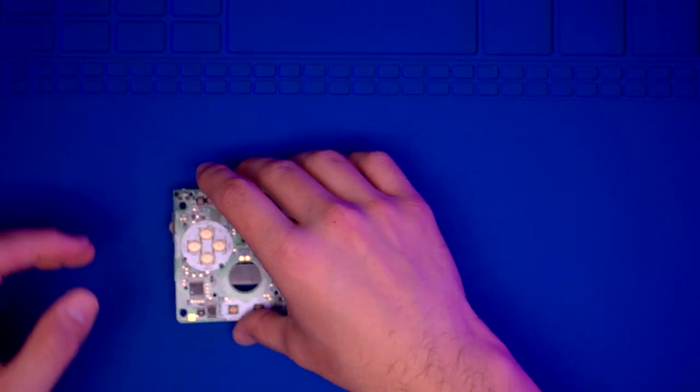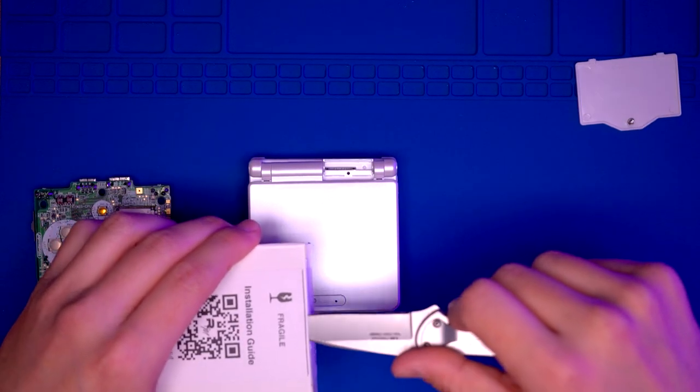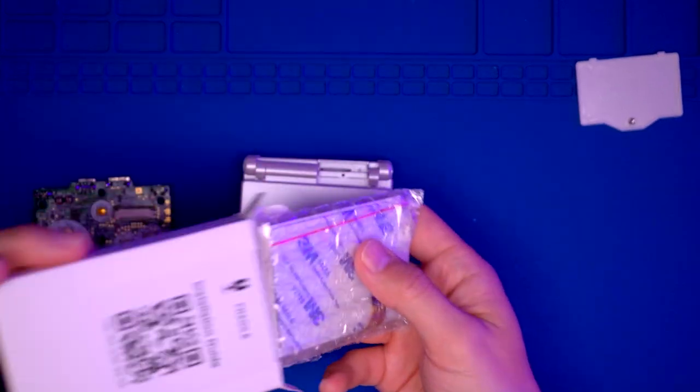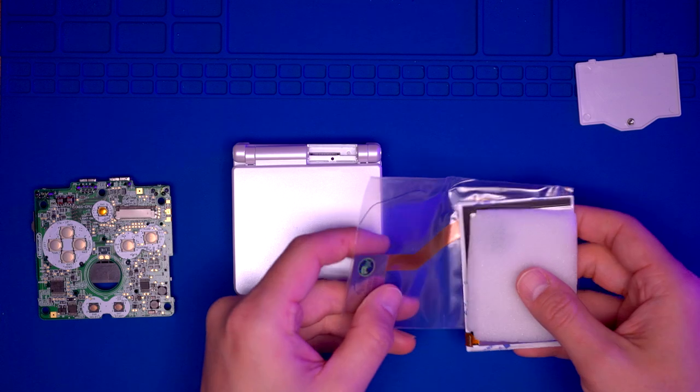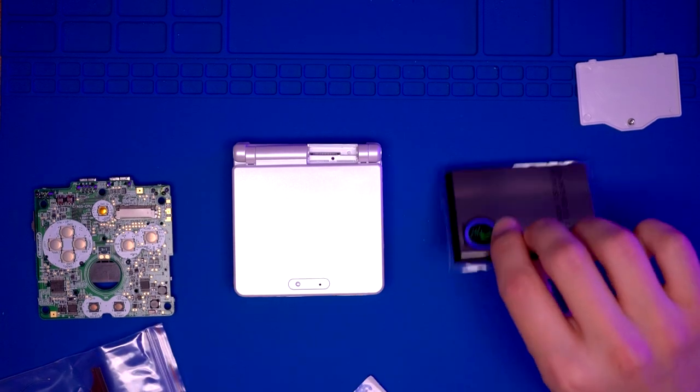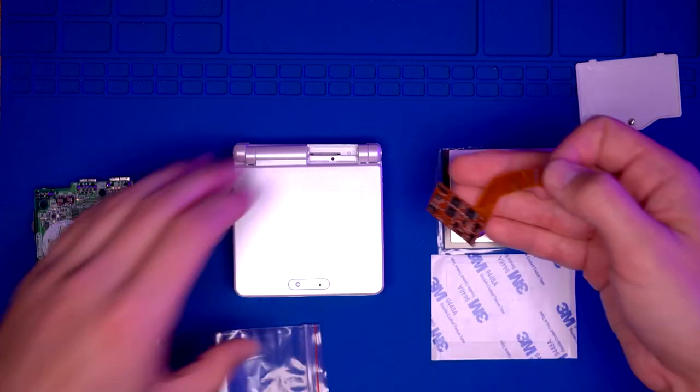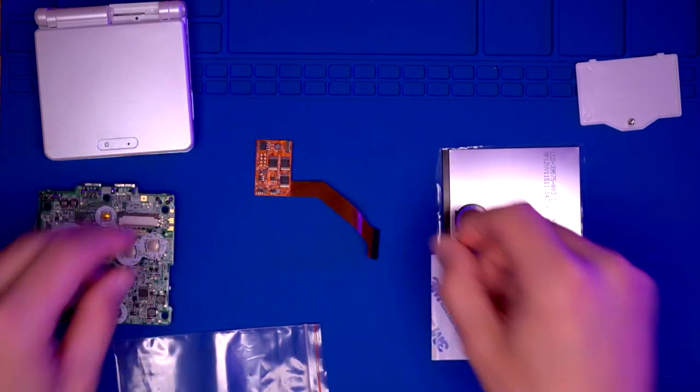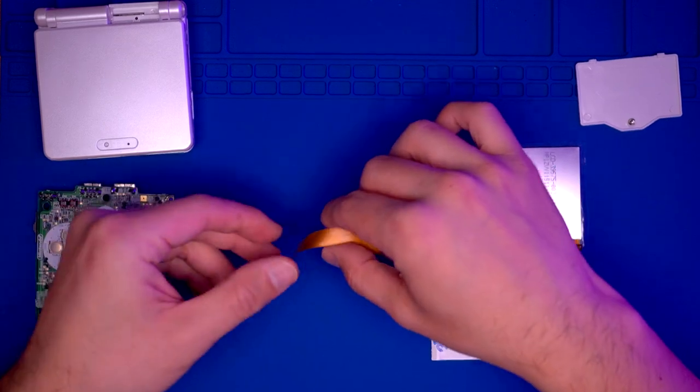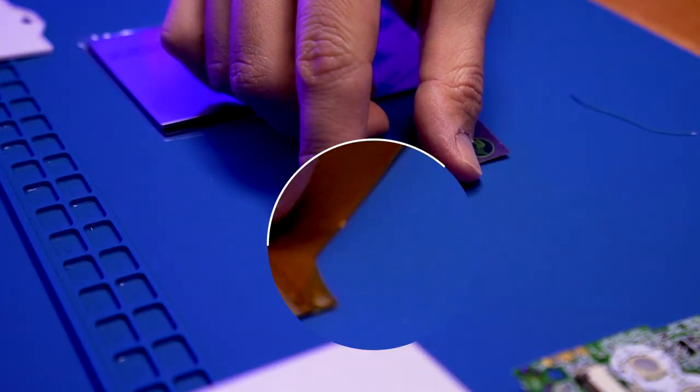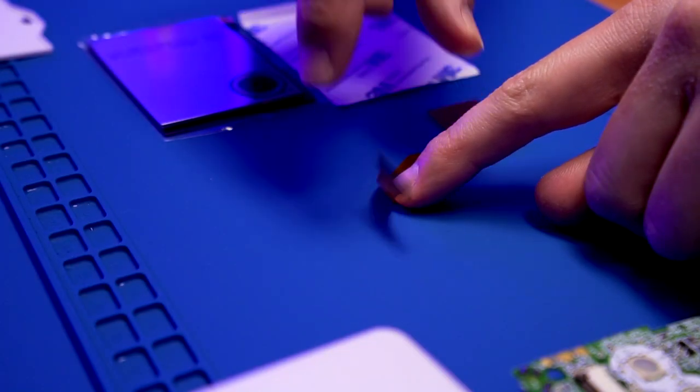Now we're going to begin to install the IPS panel into the aftermarket shell. Grab your kit and I'm going to show all the parts here. We've got the panel right there, some foam tape and the ribbon cable.